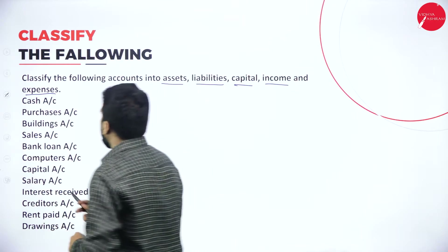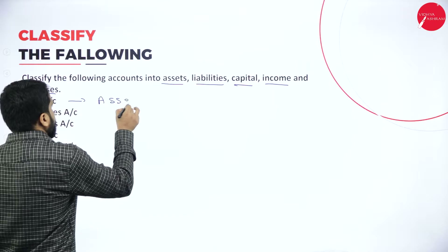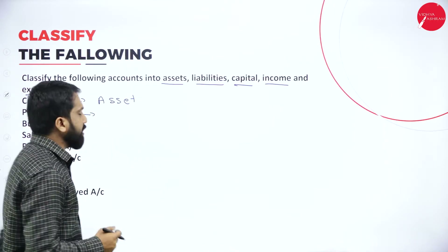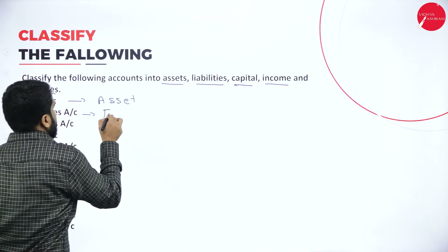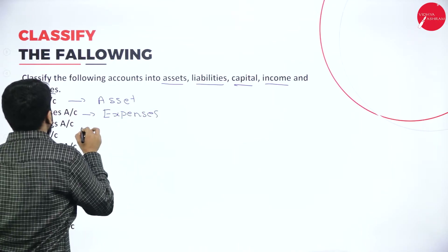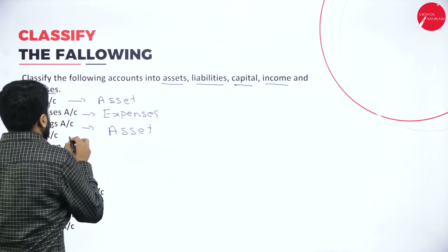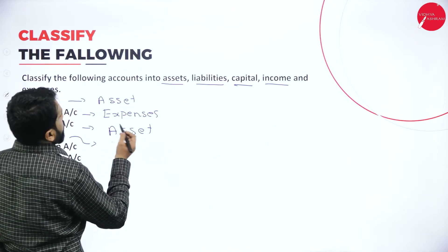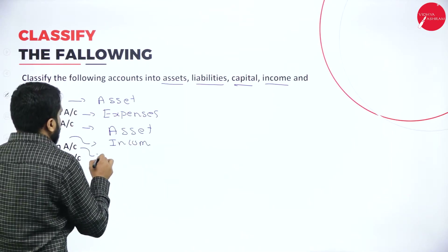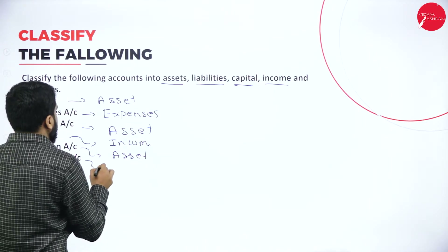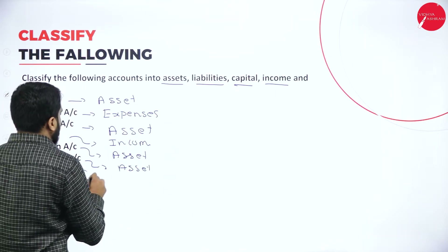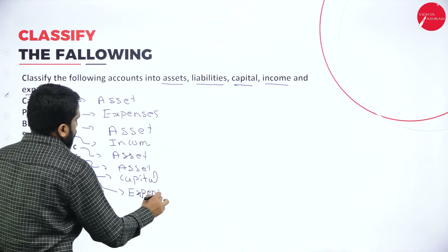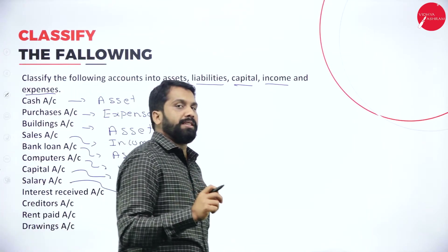Let's go through the classification problem one by one. Cash — you will be benefited, so it is an asset. Purchases — you pay money, so it is an expense. Building — it is a benefit, so asset. Sales — you collect money from the customer, so it is income. Bank account — asset. Computer — asset. Capital — it is capital itself.